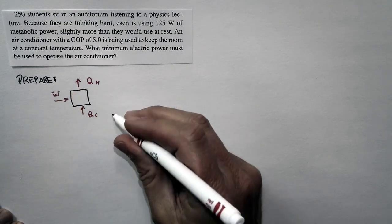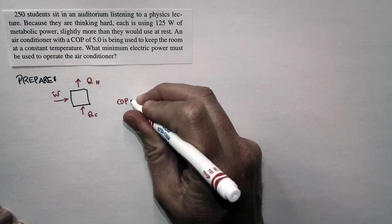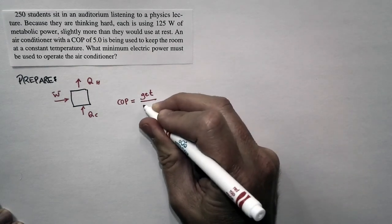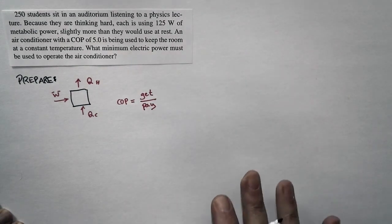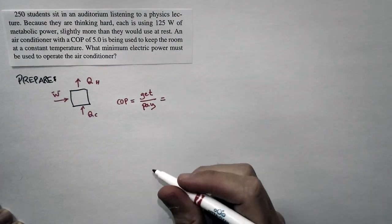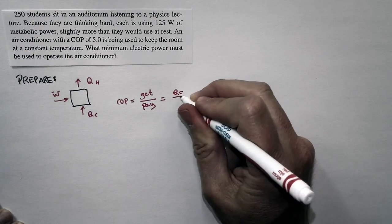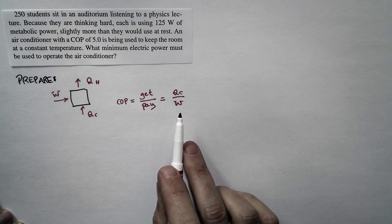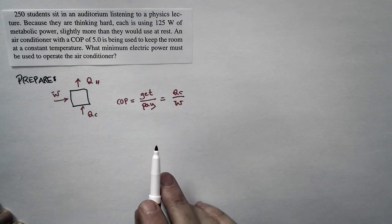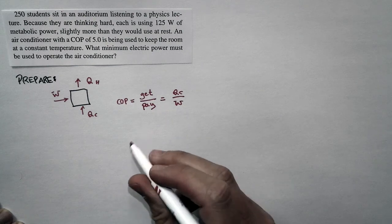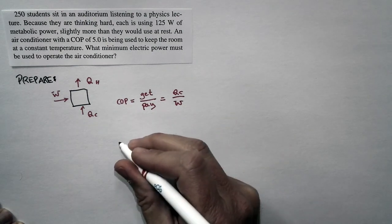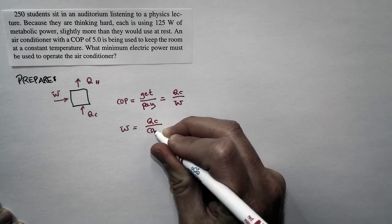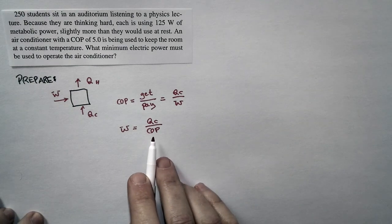We're told the air conditioner has a coefficient of performance of five. The coefficient of performance is basically an efficiency, and efficiency in general is what you get divided by what you had to pay. What you get in this case is QC, the cooling. What you had to pay is the work that it takes to run the air conditioner. That's the electric power that we're going to be computing here. The work that it takes is equal to QC divided by the coefficient of performance. That's going to be useful for us later.